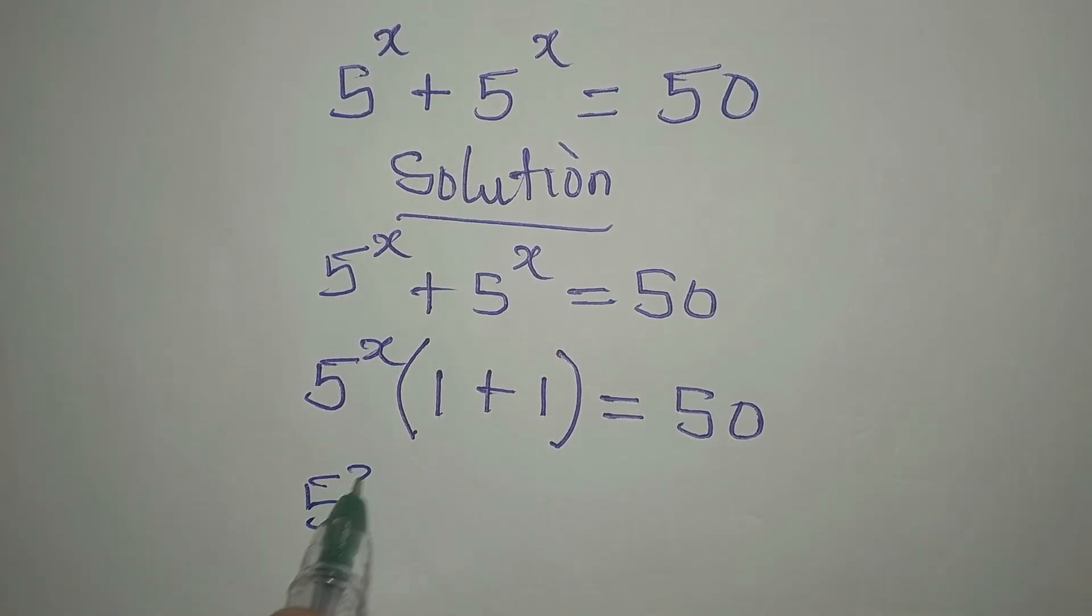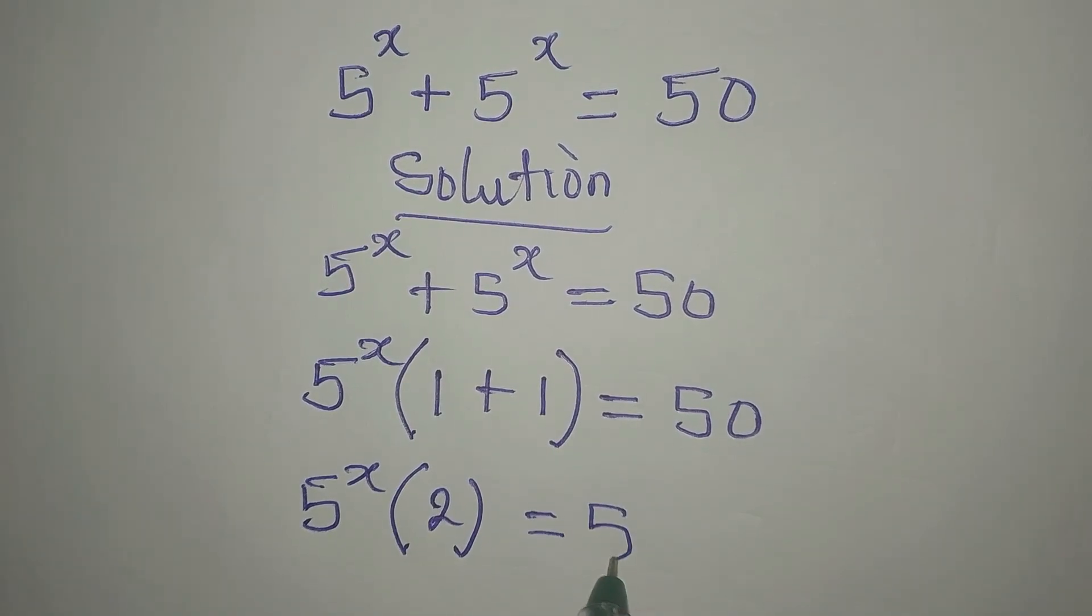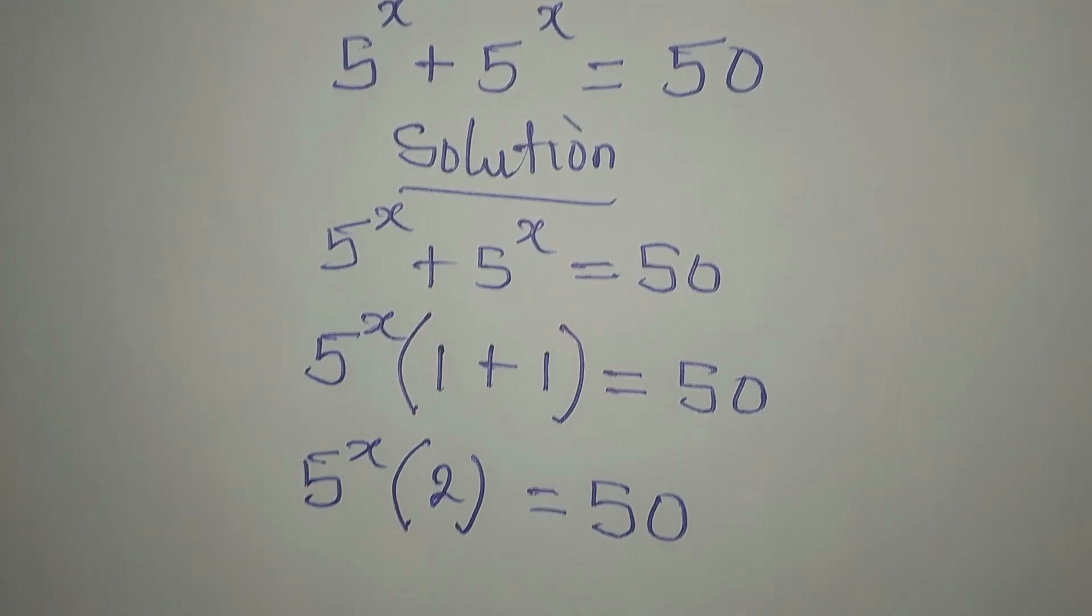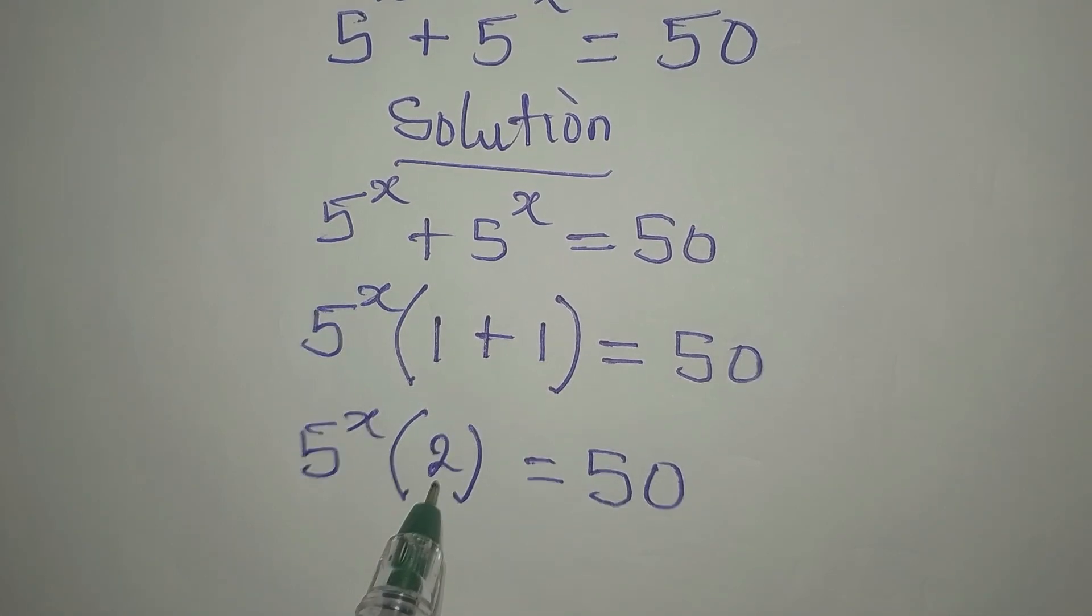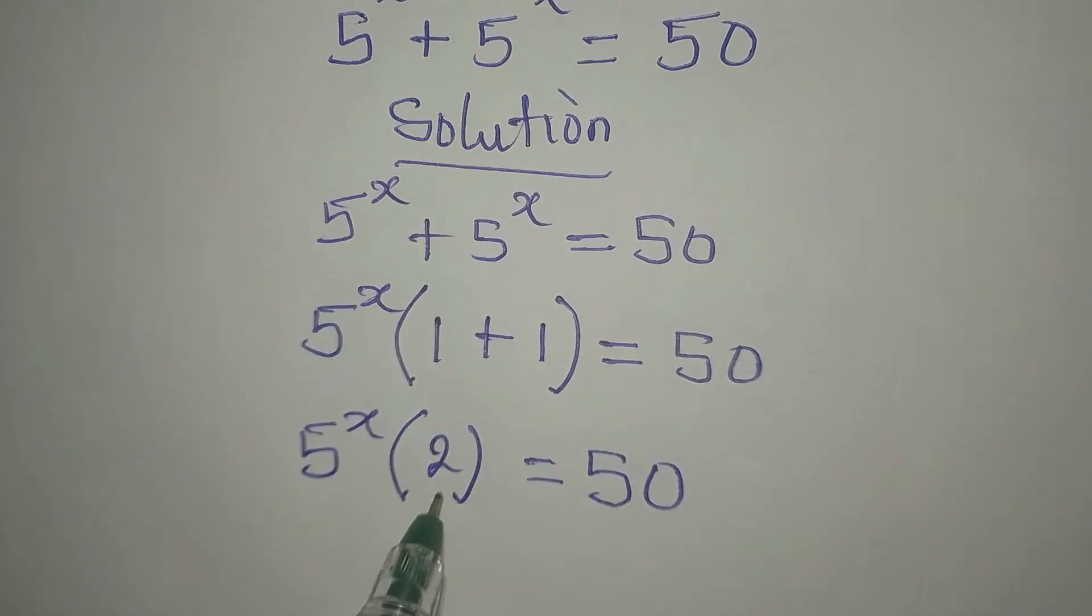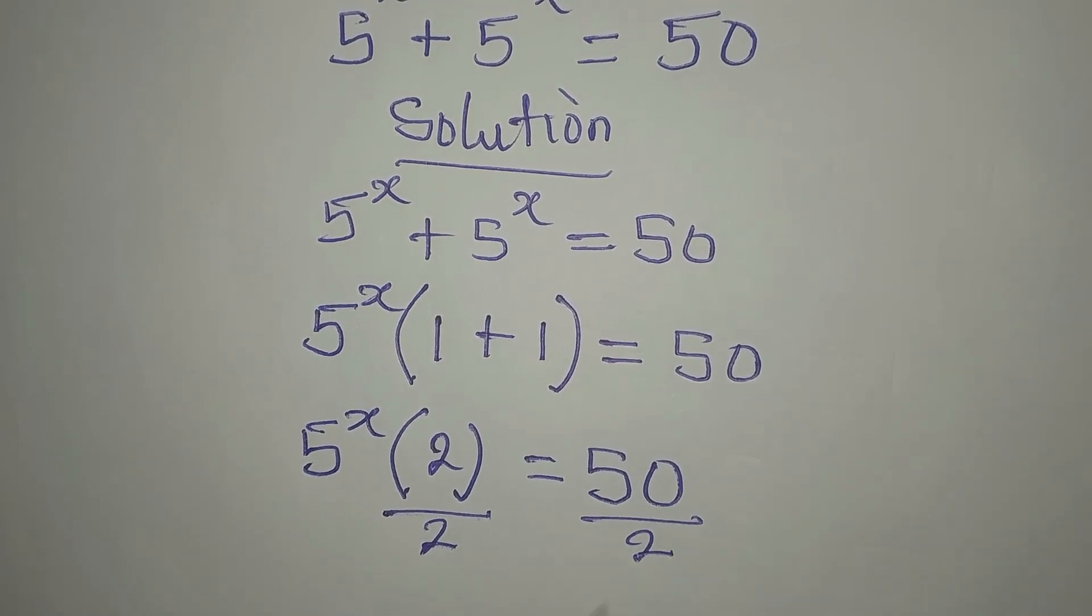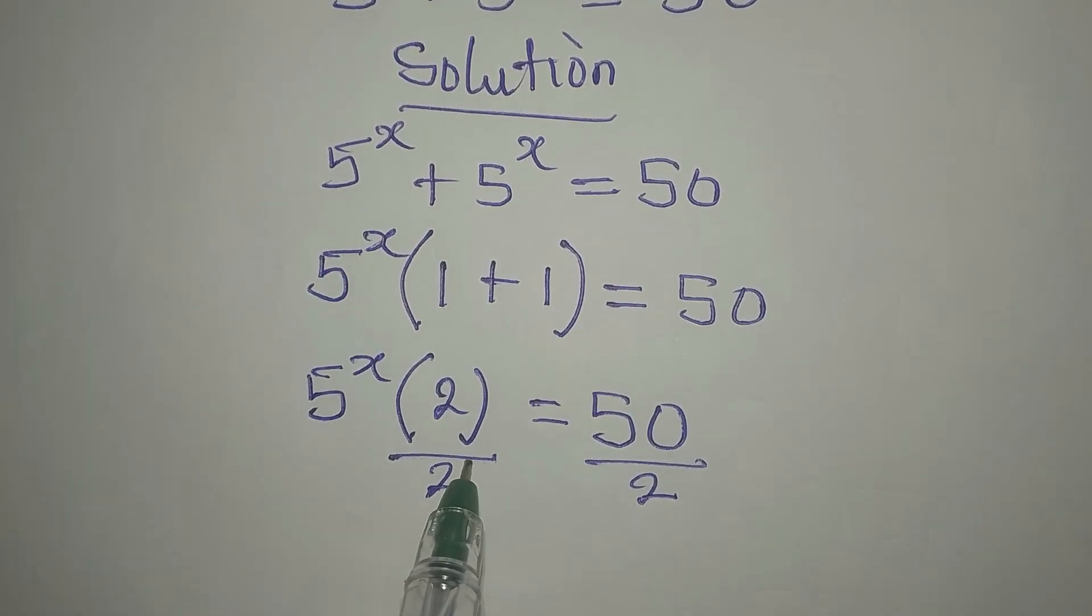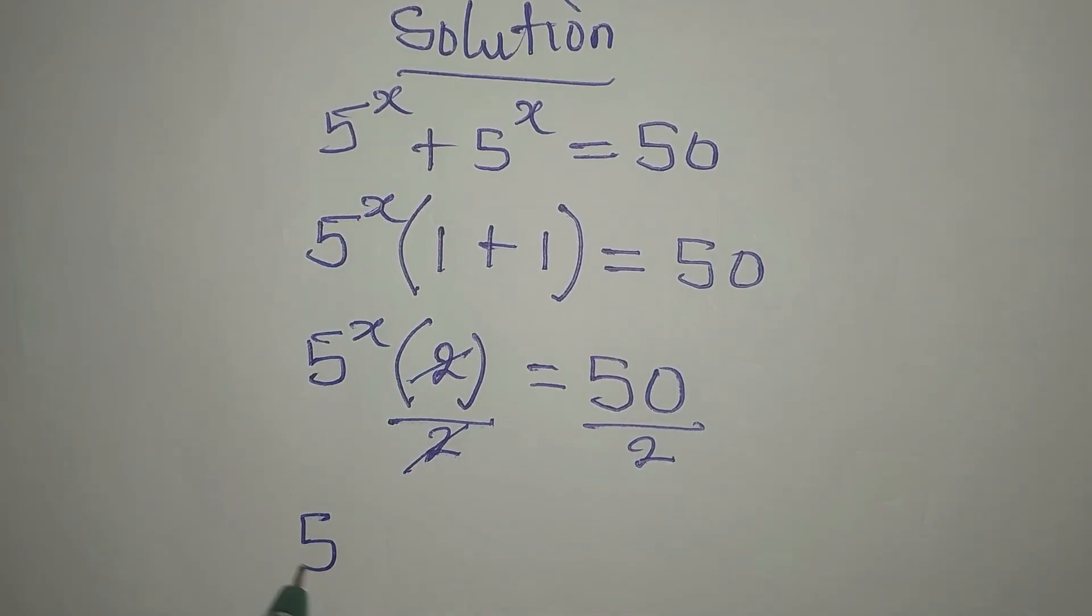Now since we are multiplying 5 to the power of x times 2, to remove the 2 you have to divide it by itself and it will reflect on the other side. This and this can go.